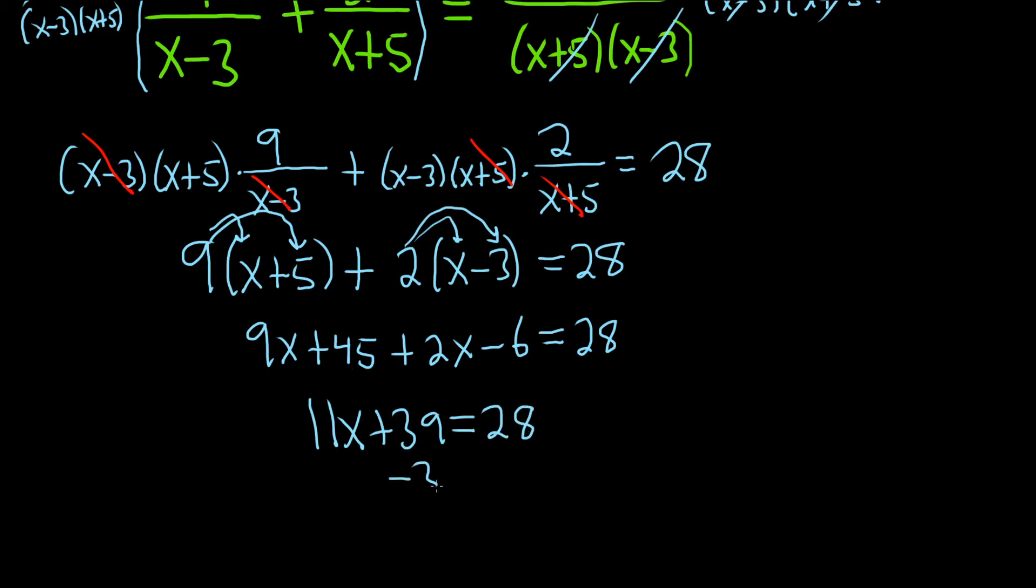And we can subtract 39 from both sides. So we end up with 11x equals negative 11. Right, 28 minus 39 is negative 11.